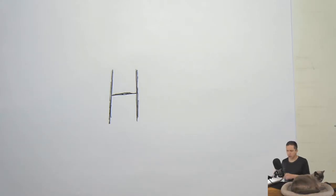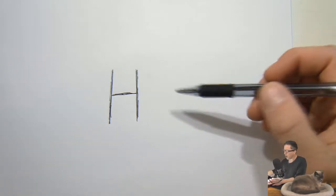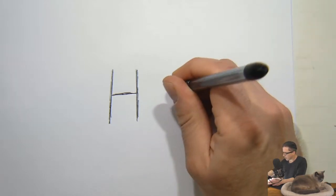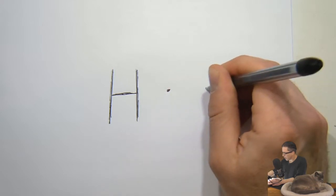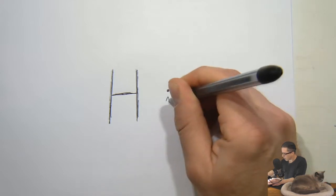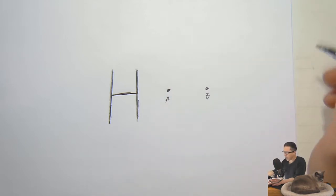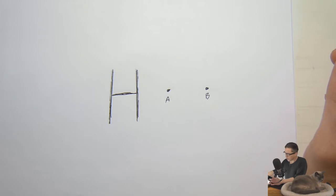Hey everybody, this is just a little extra help on figuring out wind direction. If you're just given, in this case, all I have is a high pressure center, and let's say I've got a city here and a city here. Now how do I figure out the wind direction? I have to know if it's northern hemisphere or southern hemisphere — let's say this is northern hemisphere.